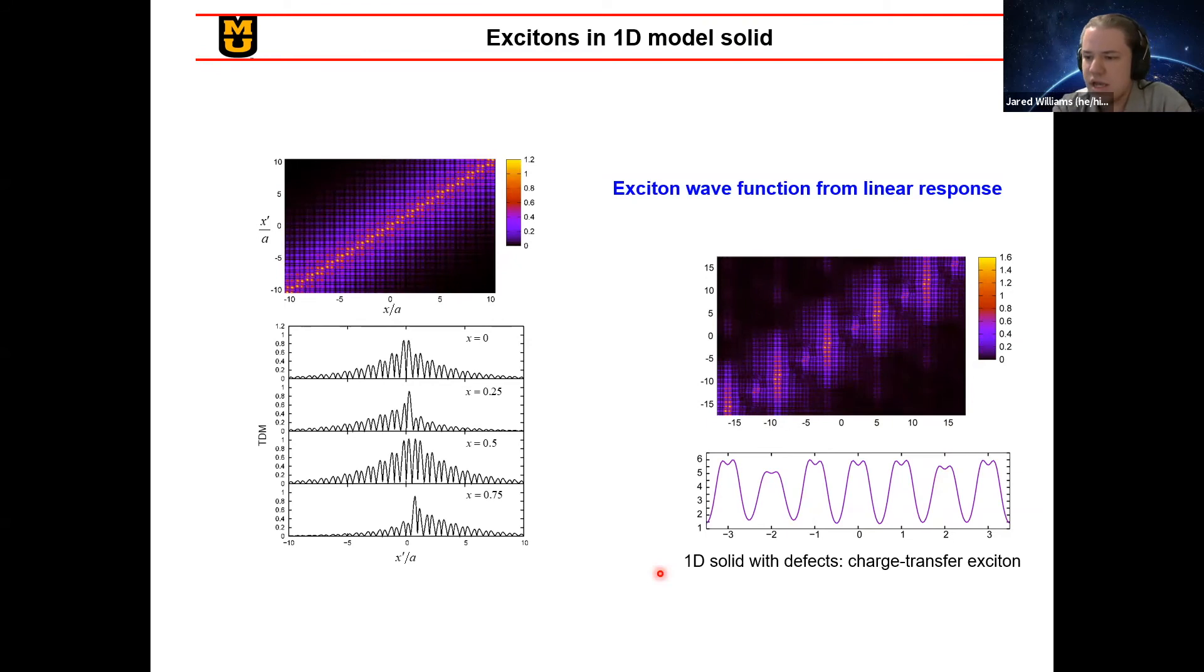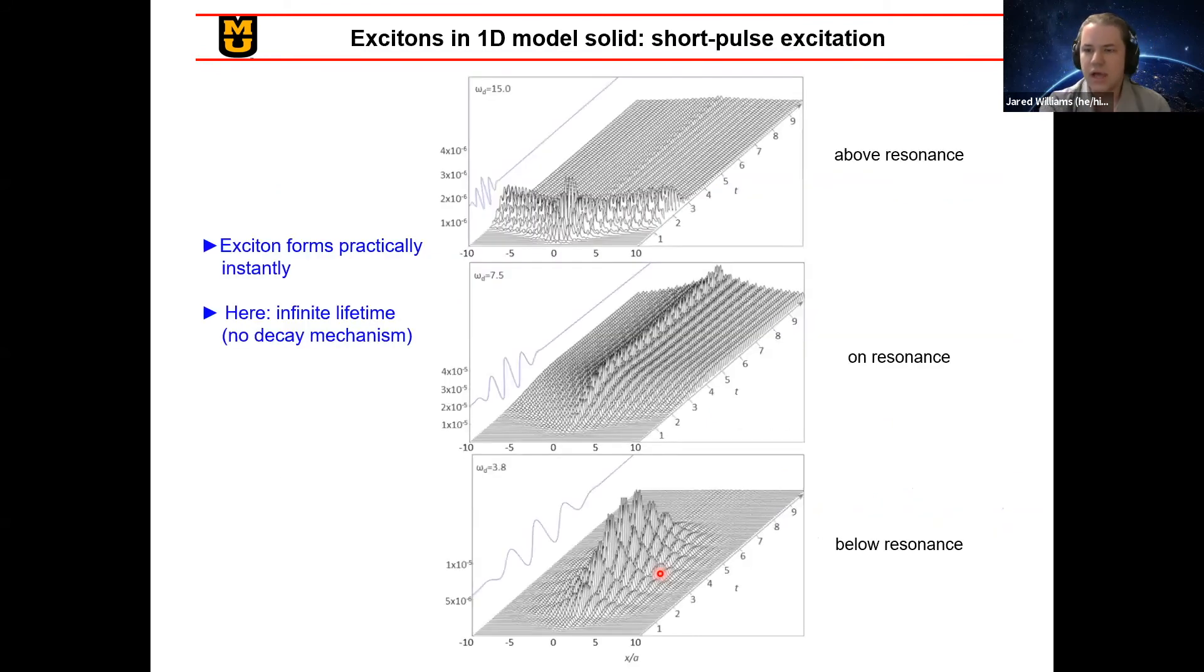Other knobs to turn in the actual time-dependent department is how you excite the system initially. So instead of using this scalar potential to offset the electrons, what we can do instead is use a short pulse. And we can vary the frequency of this pulse to see what happens. So here we've got an above, on, and below resonance pulse where, in this case, the resonance frequency corresponds to the binding energy of the exciton. And you see that with both the below and above resonance pulses, while the exciton quickly forms, it also just as quickly dies away as the pulse goes away.